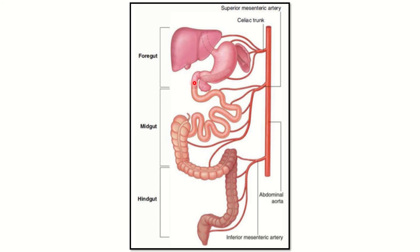Other foregut derivatives include the liver, gallbladder, and pancreas. So the foregut derivatives are: esophagus, stomach, duodenum up to the major duodenal papilla, liver, gallbladder, and pancreas. These structures are all derived from the foregut.